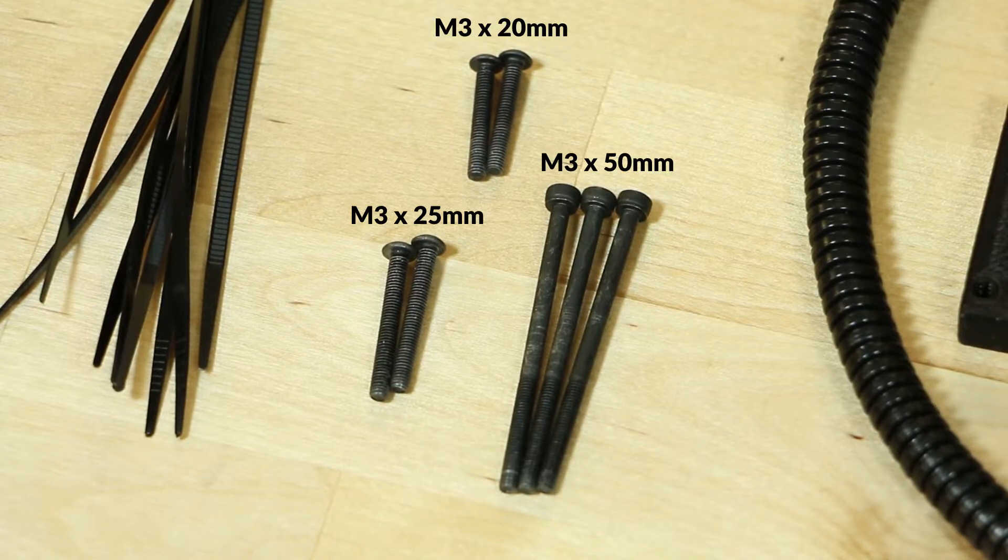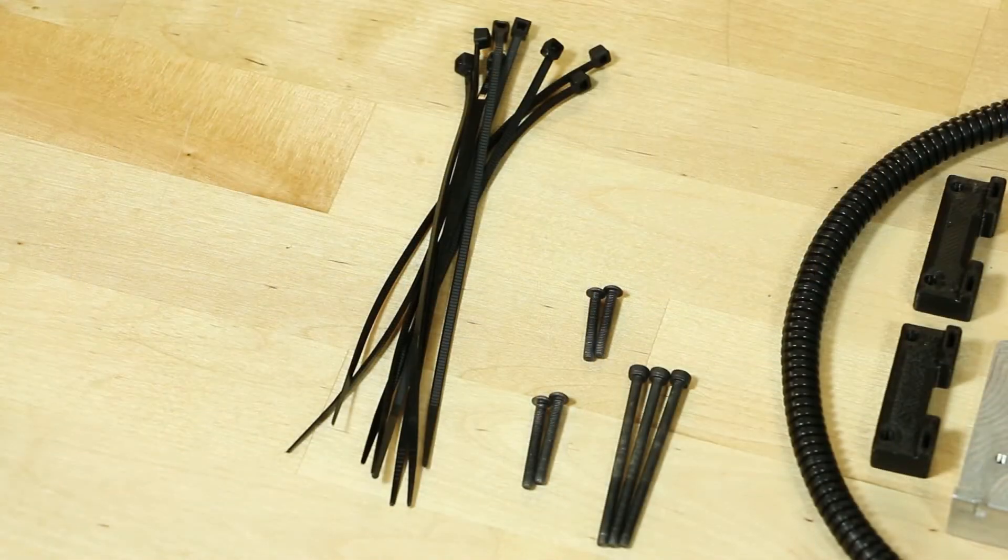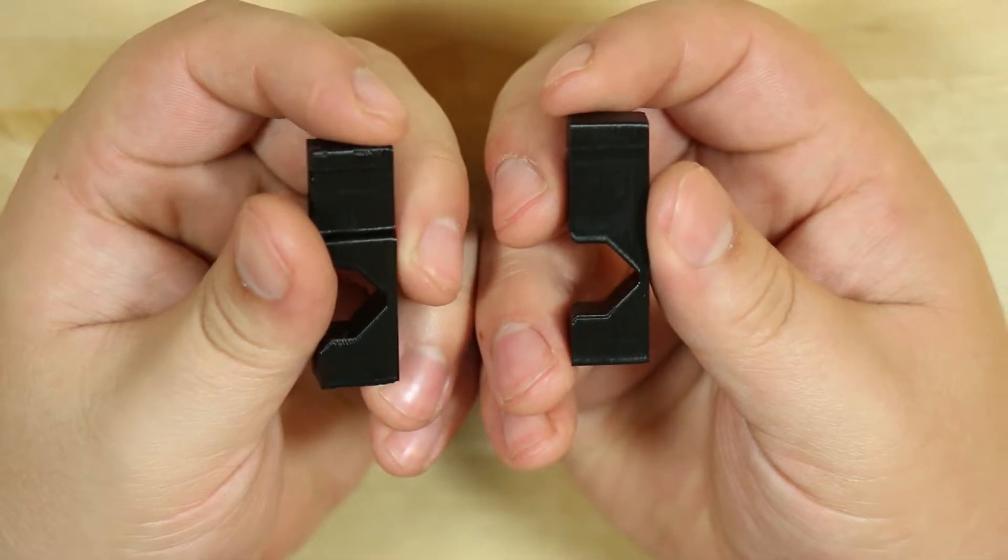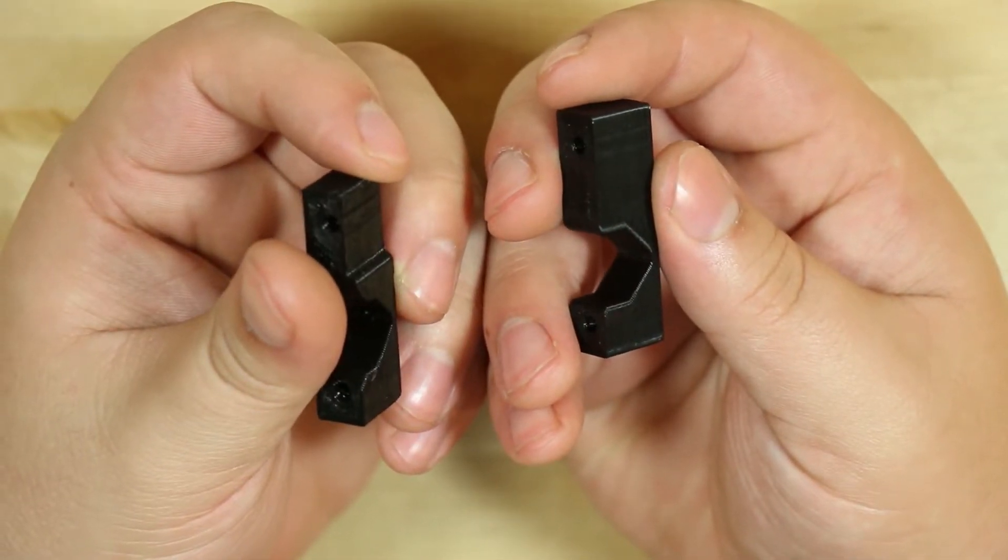Here are the screws we have for mounting the hot end and extruder plus some zip ties for cable management. Here are some of the different extruder mounts and wire ties from past versions of this kit. The extruder mount on the left is the mount that now comes standard with this kit.